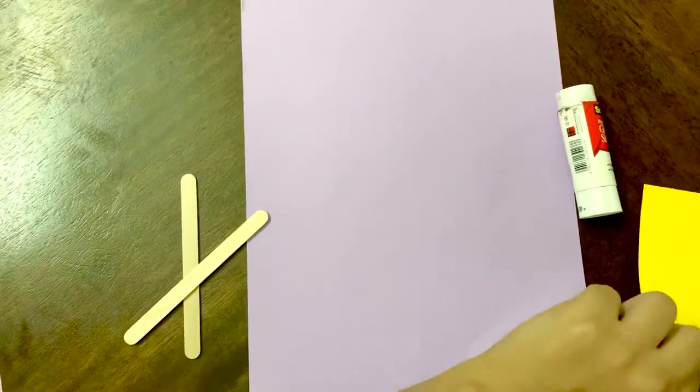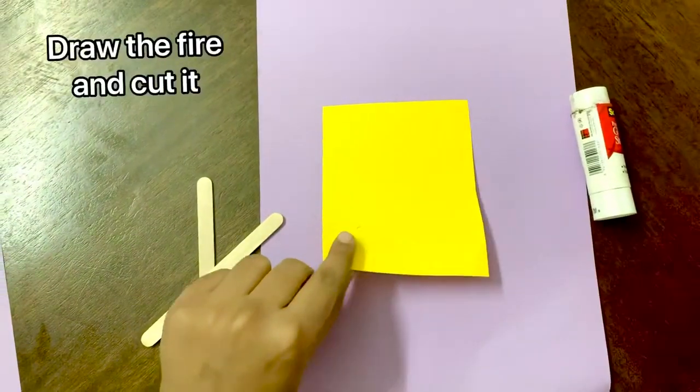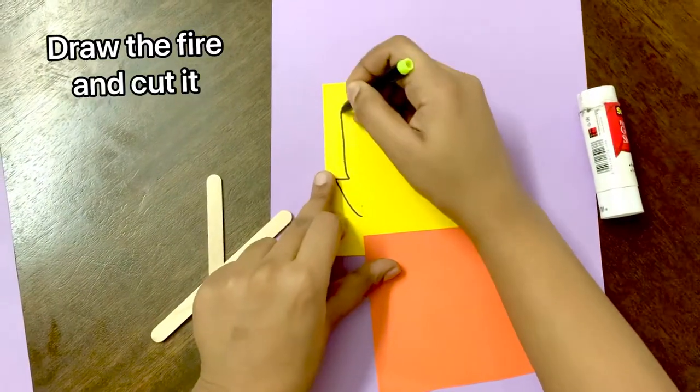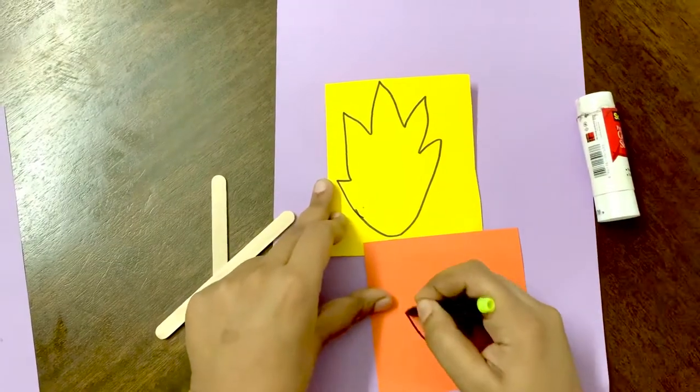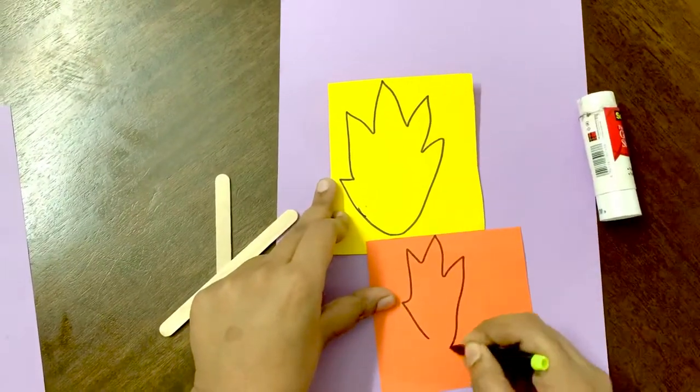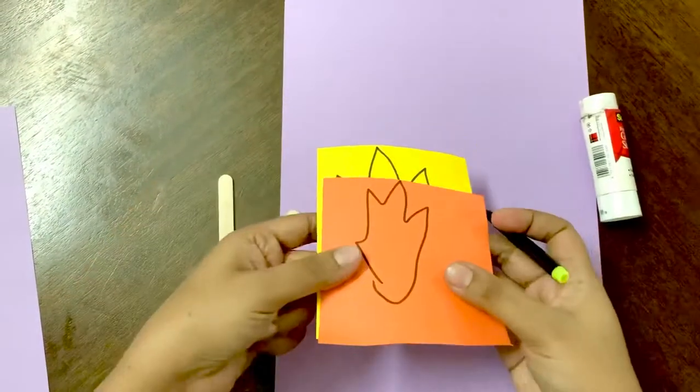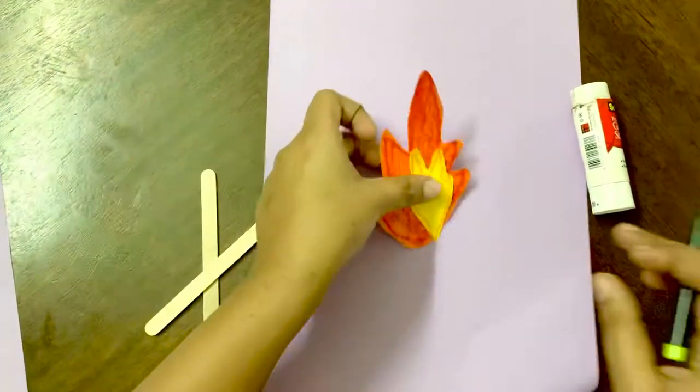After that, take a yellow sheet and an orange sheet. Cut the paper and cut it into pieces, like this.